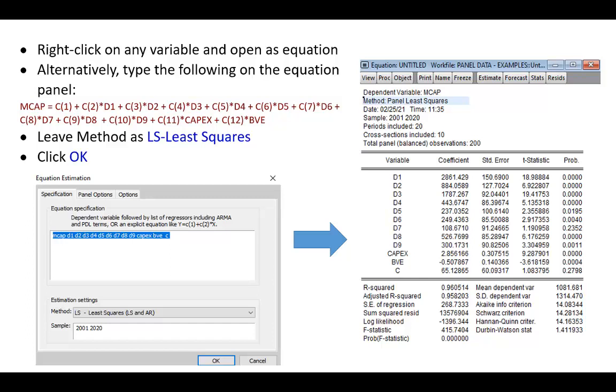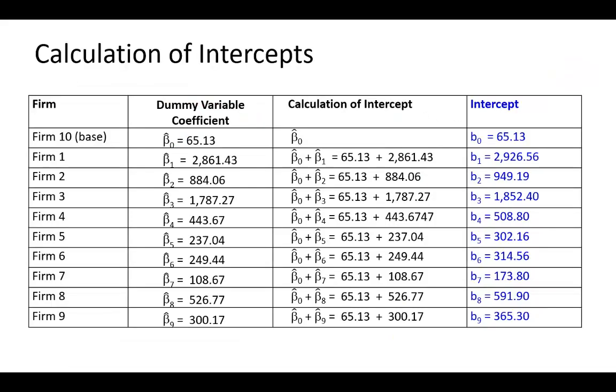Different intercepts tell us that we have 10 different regression lines, one for each firm. However, remember to determine the actual intercept for each firm, we're going to have to perform these adjustments right here.